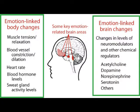In essence, the process appears to work as follows. Information registering in the brain can prompt brain responses that result in various brain and body changes. On the body side, some of these are muscular tension or relaxation, blood vessel constriction or dilation, a rising or falling heart rate, sweat gland activity, and changes in the mix of hormones in the blood.